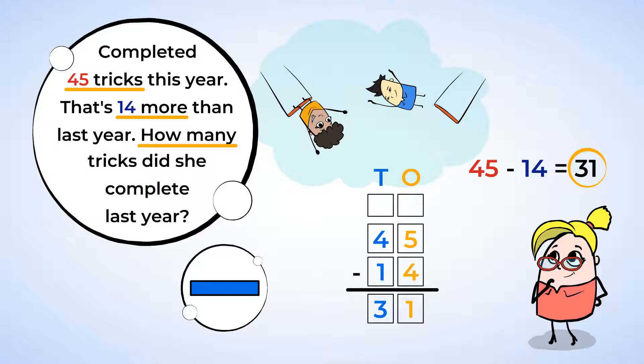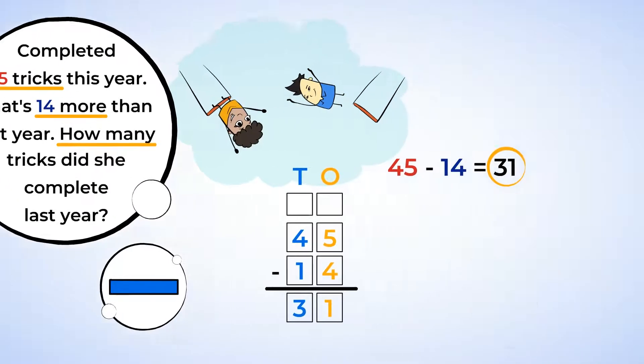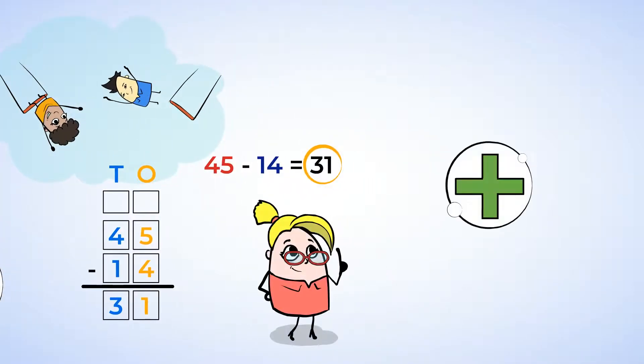The trapeze artist only completed 31 tricks last year. Which, I have to admit, is 31 more tricks than I completed last year. Sometimes, especially as the numbers get bigger, it's helpful to double check our work. And we can do that by using an addition equation. Since we found 45 minus 14 equals 31, then if we add 14 and 31, we should get 45.